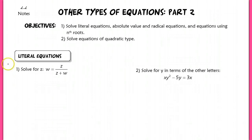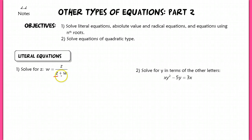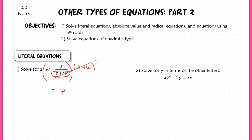So first question here — solving literal equations. These usually give you trouble because you're not really sure what to do when you have all these variables in there. But remember, you can't do anything that you couldn't normally do with just numbers. So if I have a variable in the denominator like I do here — it's z we're solving for — I need to get that out of the denominator. I can't just multiply by z, though, because z and w are attached, so z plus w is going to be multiplied on both sides, and when I do that, on the right-hand side I'm left with just z because this cancels out.